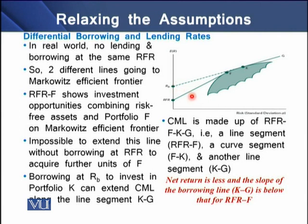The first line, risk-free rate F (RFR), shows investment opportunities combining the risk-free assets and portfolio F on the Markowitz efficient frontier. It is impossible to extend this line without further borrowing at RFR to acquire further units of F at the same level of riskiness.